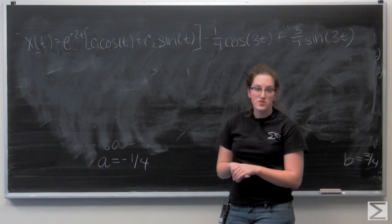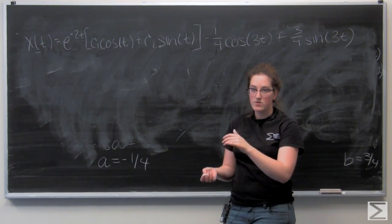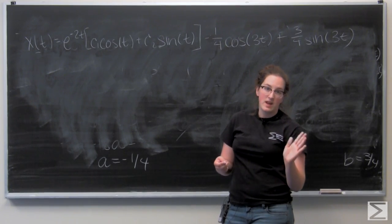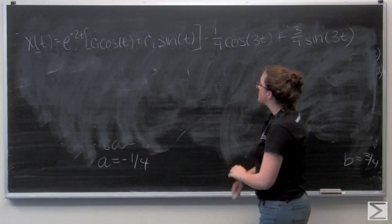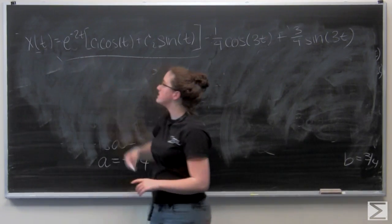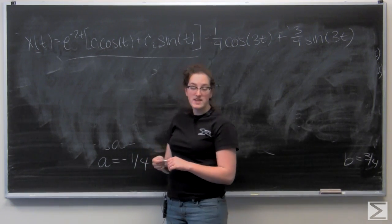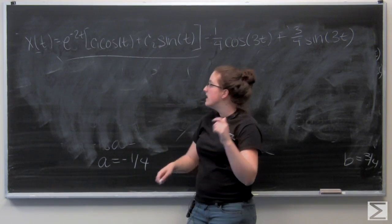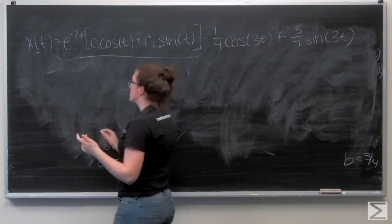Well, let's recall that the transient portion of the solution is one that's there in the beginning and then kind of dies out. So its limit as t approaches infinity is going to be 0. And this term right here will do just that. Since it's multiplied by e to a negative constant times t, as t increases, that coefficient is going to go to 0. So this is our transient portion of the solution.